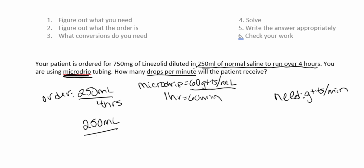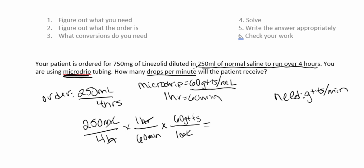We start with 250 mL over four hours. Get rid of hours: one hour equals 60 minutes — cross off hours. Next, get rid of mL: put one mL on the bottom and 60 drops on top — mL crosses off. We're left with drops per minute. Multiply across the top: 15,000. Multiply across the bottom: 240. Divide to get 62.5. We can't have a decimal drop, so we round up because we're at 0.5 — the answer is 63 drops per minute.